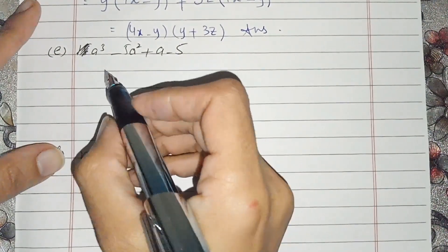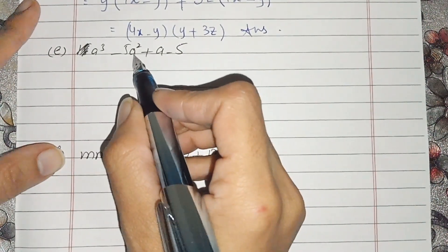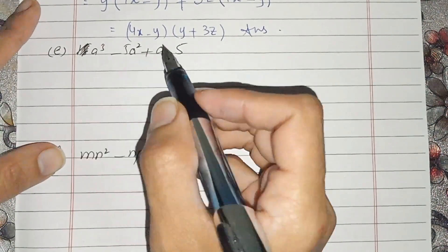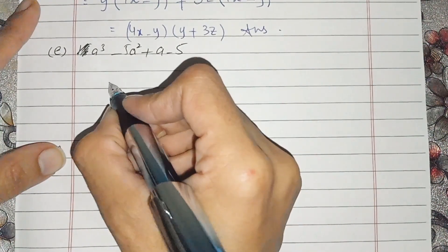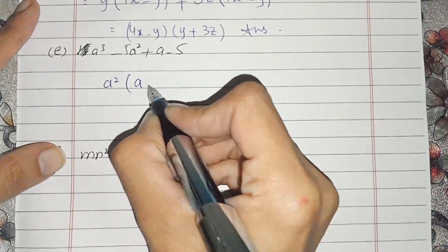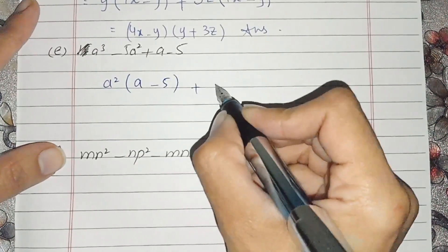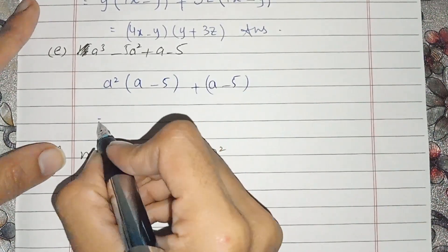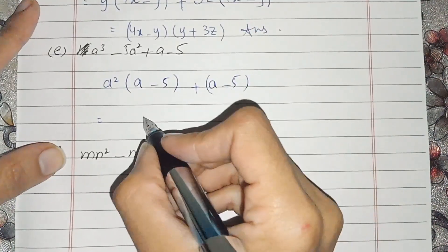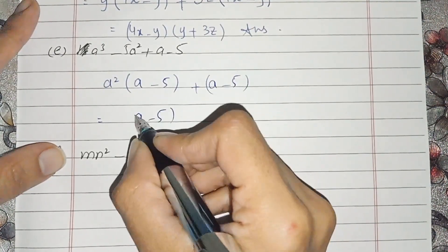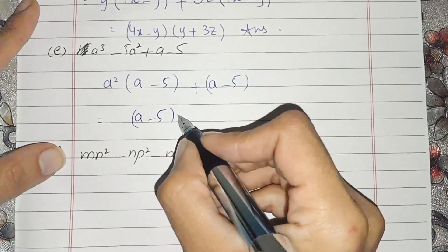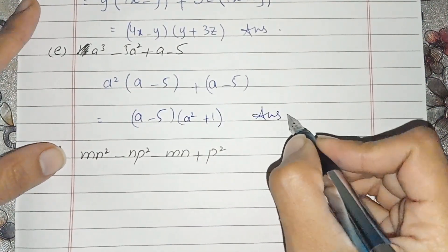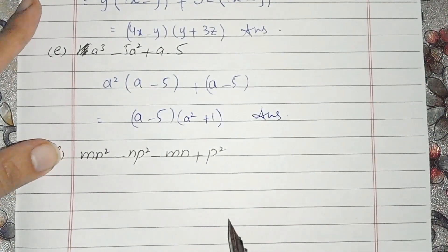Now students, e part. In e part, from the first two terms, A squared is the common factor, and left is A minus 5. In the next terms also we have A minus 5. So A minus 5 is common in both. We take it out and what is left is A squared plus 1. This is the answer of e part.